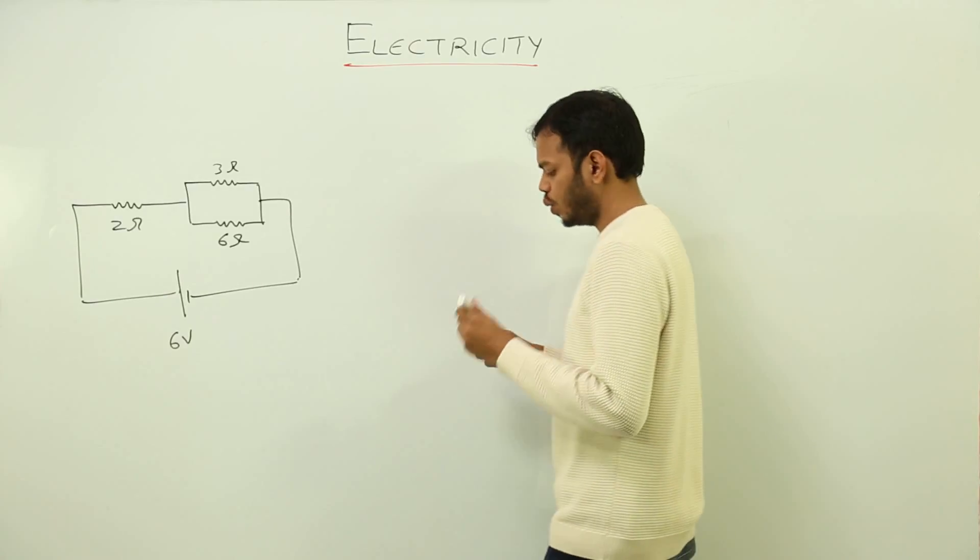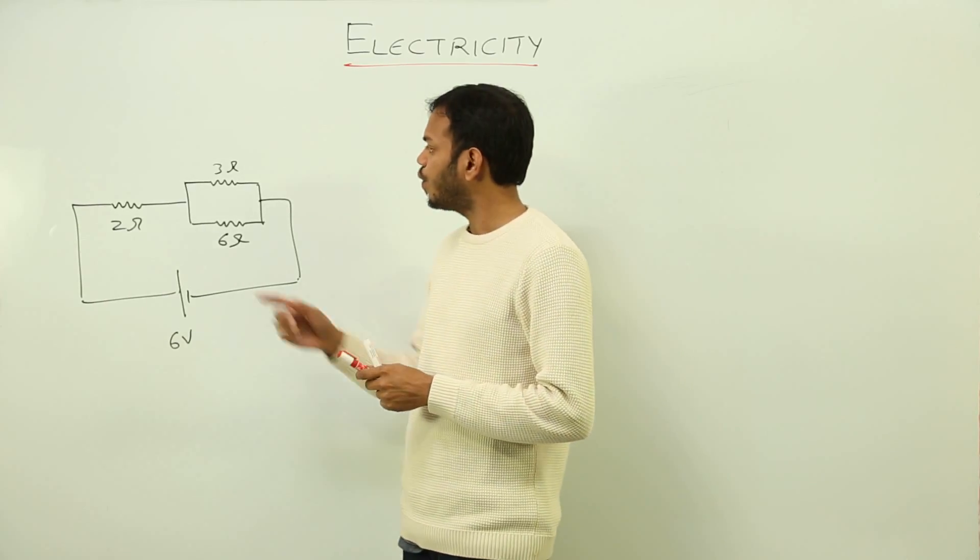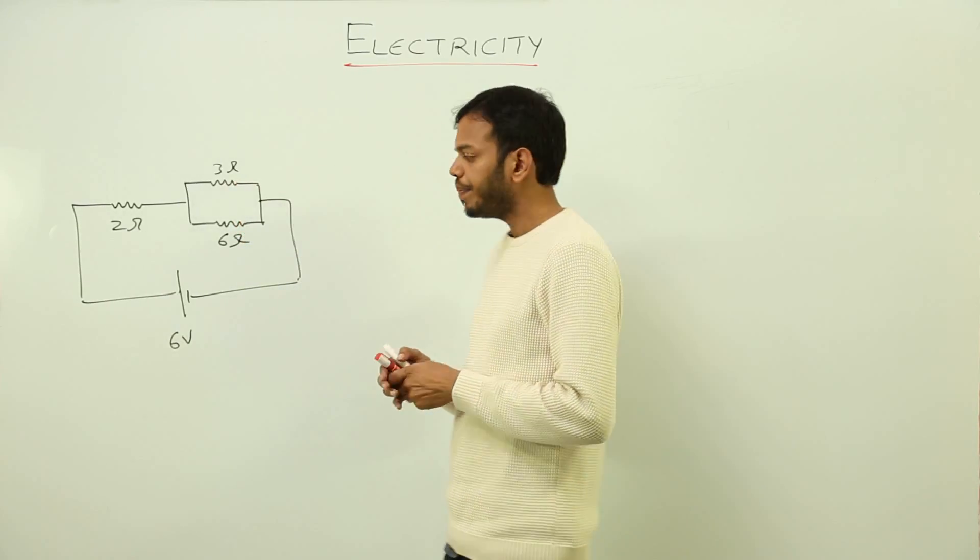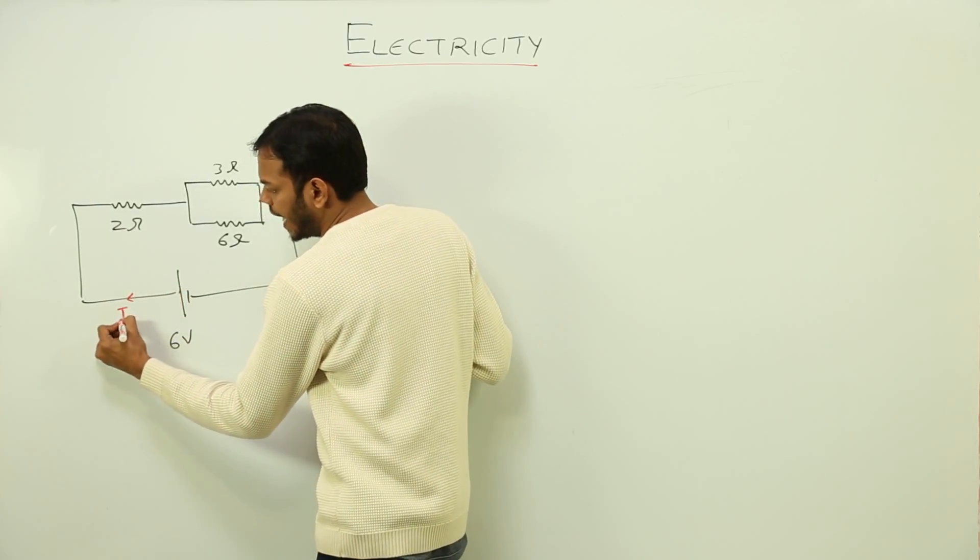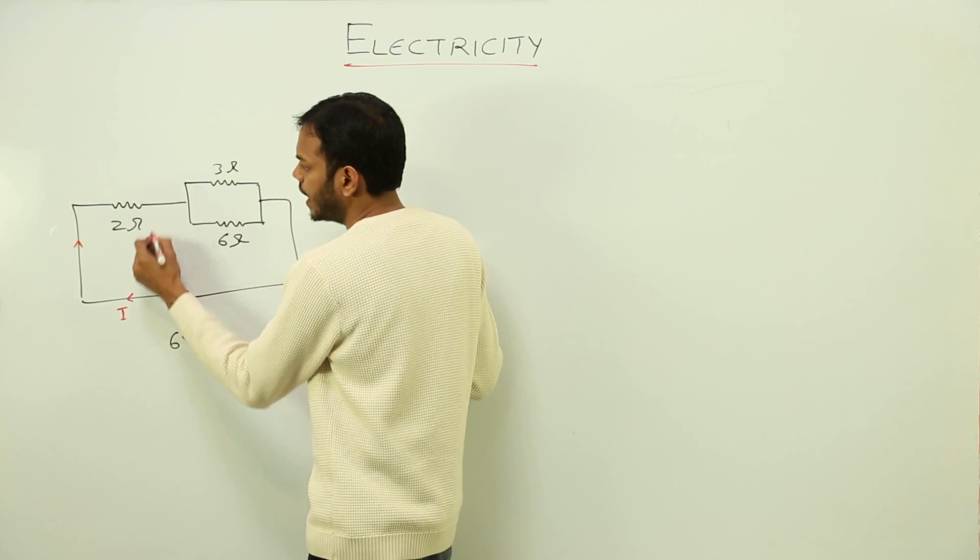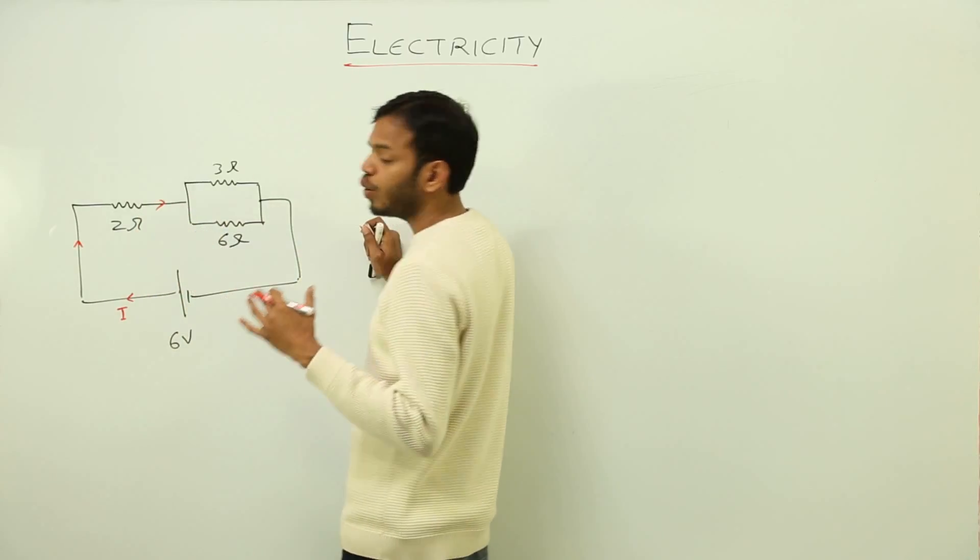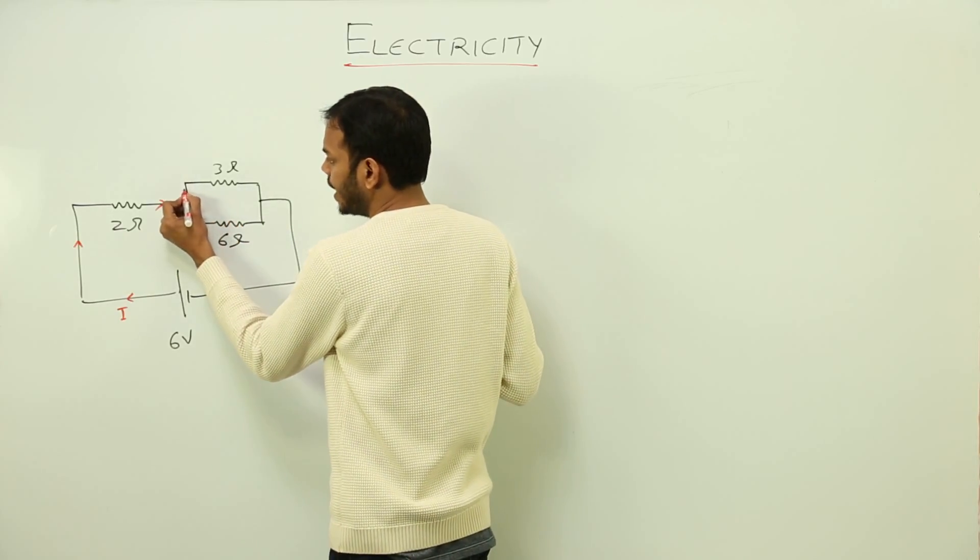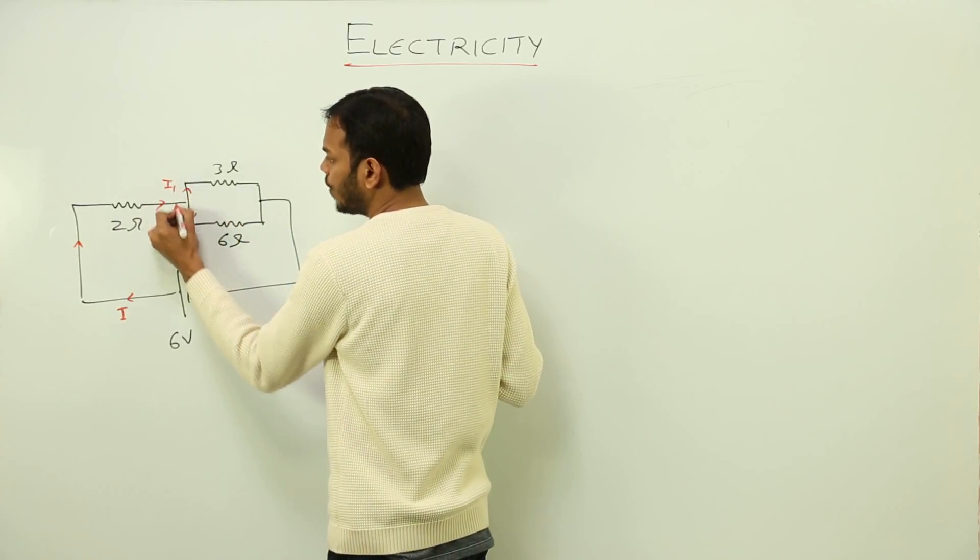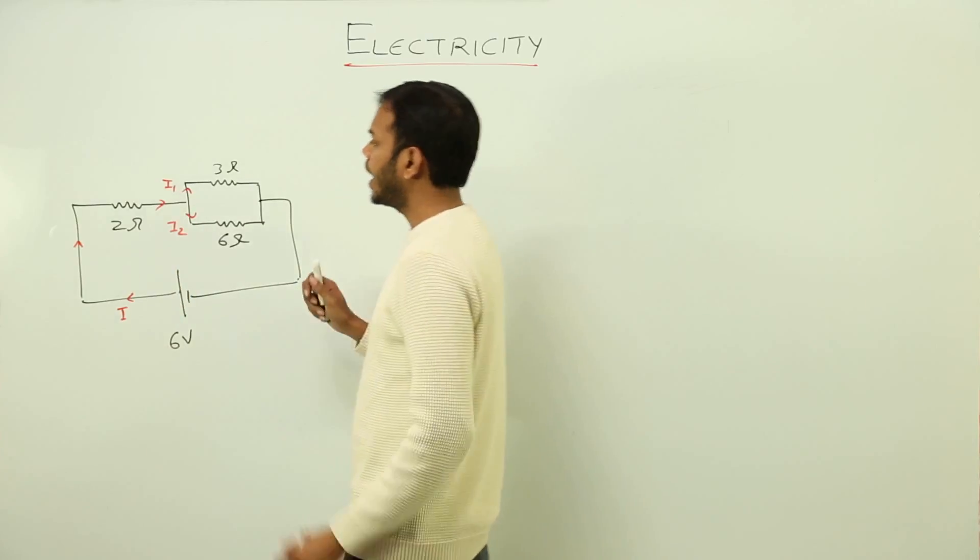I want to know what would be the value of current flowing through the 3 ohm resistance. So what exactly is happening? Suppose whatever current I is flowing in the circuit, this current is going to get distributed when the current faces a parallel combination. So this current will be bifurcated into I1 and I2.